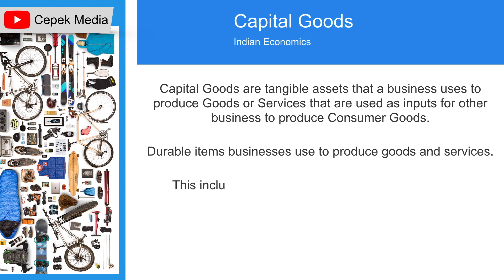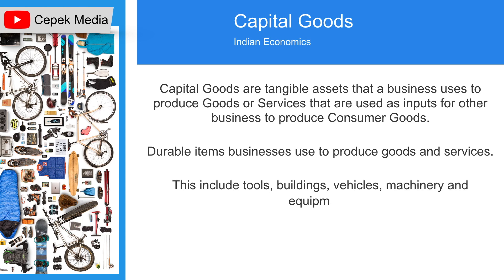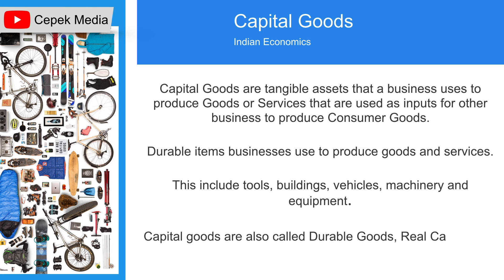Examples of capital goods are buildings, machinery, equipment, vehicles, and tools. The industrial sector of the economy includes capital goods producing businesses such as Caterpillar and Lockheed Martin.